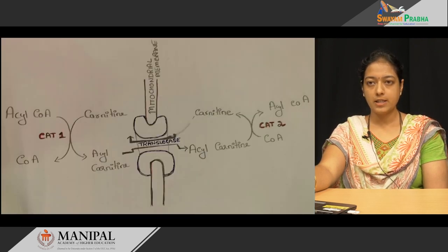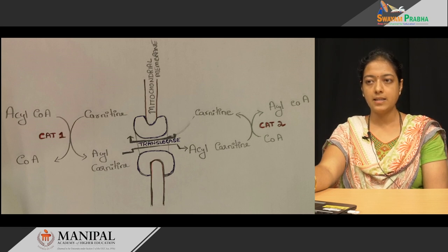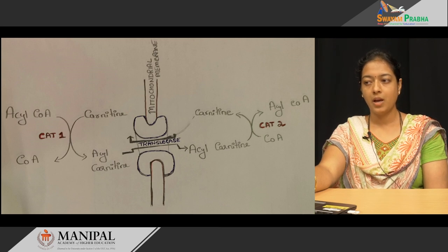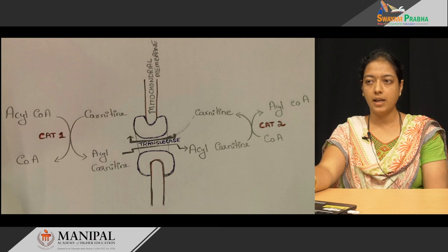In the mitochondria, the acyl-carnitine again gets condensed with coenzyme A using the enzyme carnitine acyl-transferase-2, forming the activated fatty acid, while carnitine is released. The released carnitine comes back with the help of translocase to the cytosolic side for repeat reactions, where it reacts again with fatty acyl-CoA to form acyl-carnitine for further transport cycles.